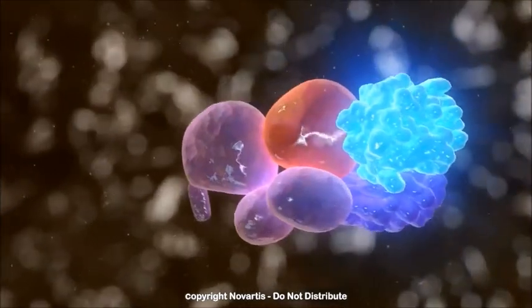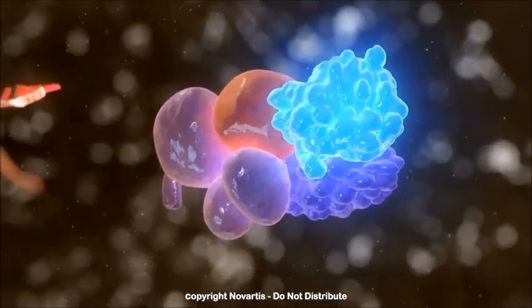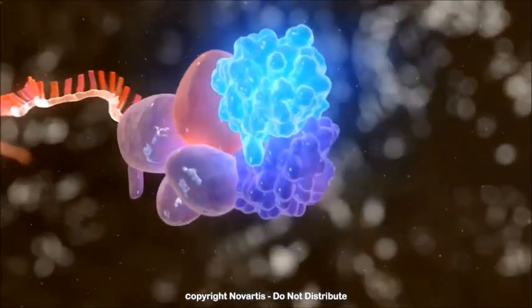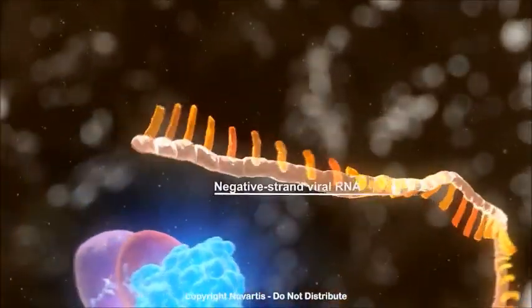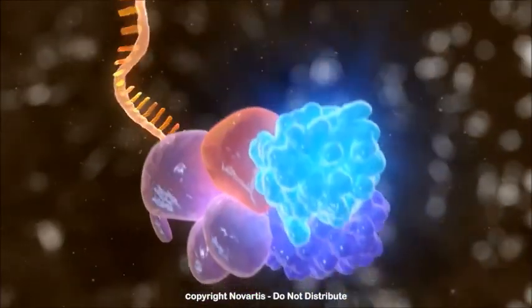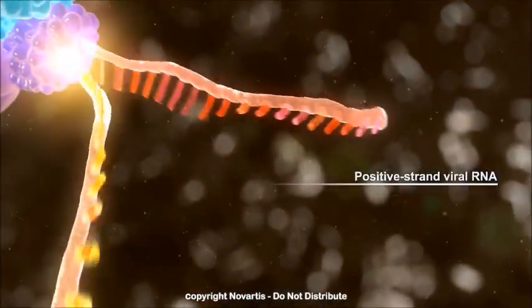A replication complex is now formed to generate new viral RNA. A negative strand RNA intermediate is formed and is used as a template for the synthesis of positive strand RNA.